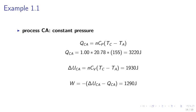Process CA. QCA equals NCP(TC minus TA). Because of constant pressure, we use CP. And we obtain 3220 joules. Delta UCA equals 1930 joules. And the work done is 1290 joules.